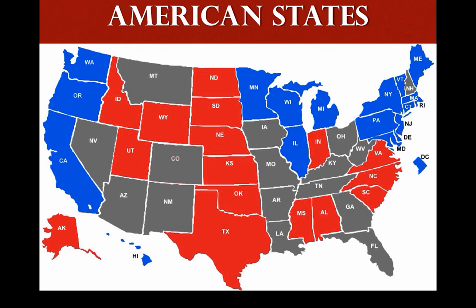This United States map uses color to show party strength. The red color represents Republicans and blue represents Democrats — for example, California is blue and Texas is red. The gray color represents swing states that are neither solidly Republican nor Democrat. Elections are often decided by those gray states, like Florida.